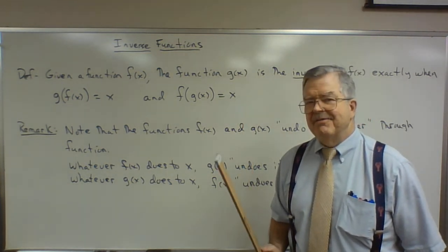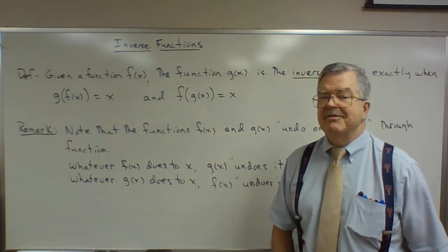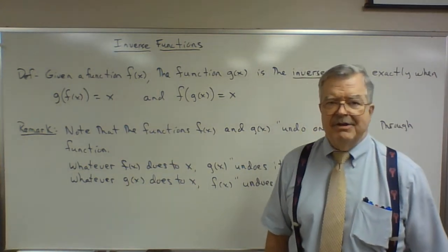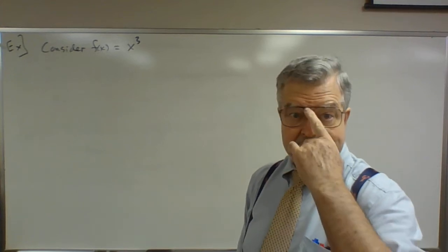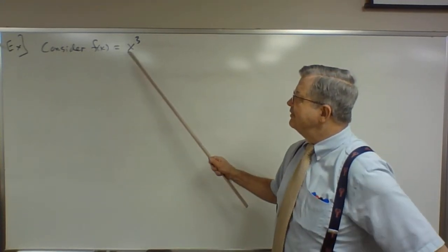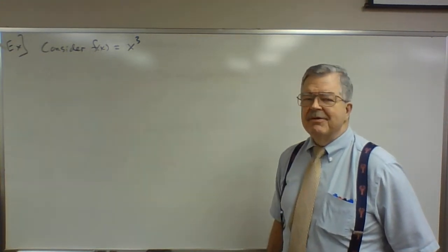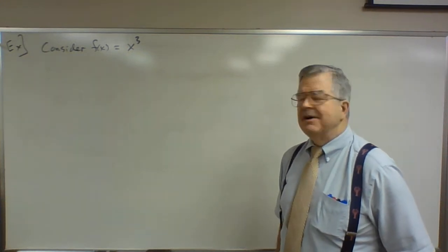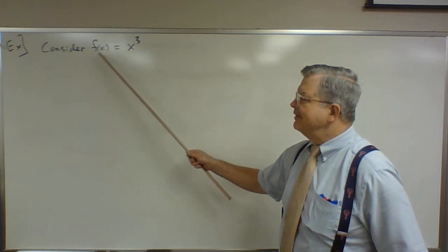So if f is the inverse of g, then g is the inverse of f of x also, and vice versa. Now let's look at some examples. Let's consider the function f of x equals x cubed. The inverse of f of x would be that function that reverses whatever it is that f does to x.